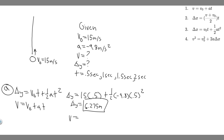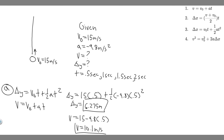Now for the velocity: V equals V-sub-0 plus a times t, so V equals 15 minus 9.8 times 0.5. That gives V equals 10.1 meters per second. So for Part A, the displacement is 6.275 meters and the velocity is 10.1 meters per second.